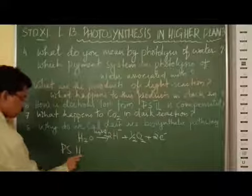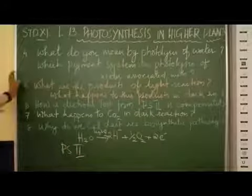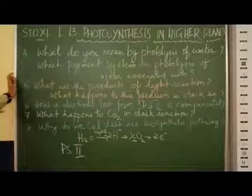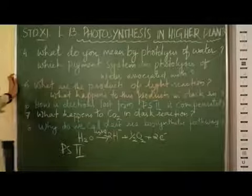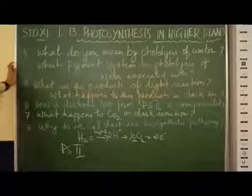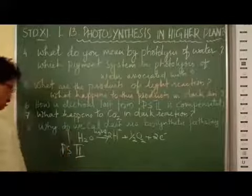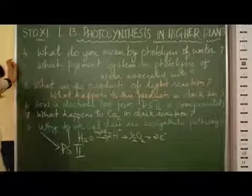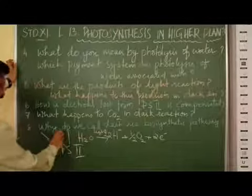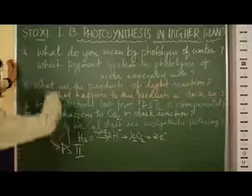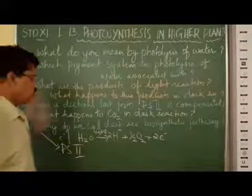Pigment system 2 is the answer for this. Because in this pigment system, when light energy falls on it, high energy electrons are emitted from it. So the electrons will be lost; it will go to pigment system 1.